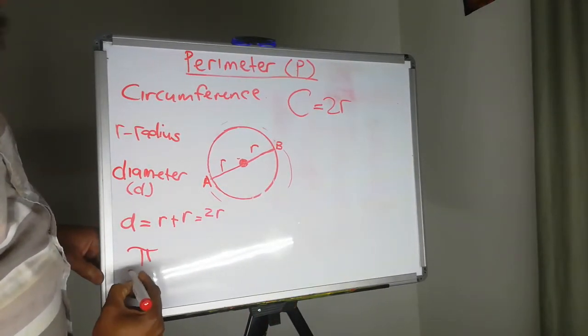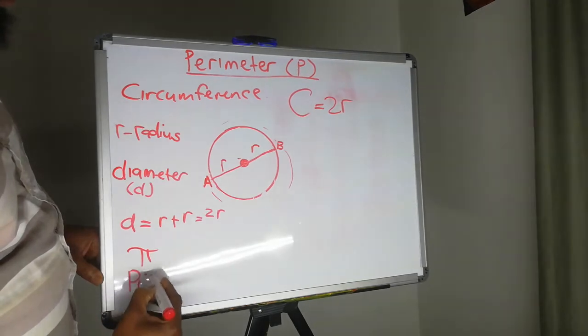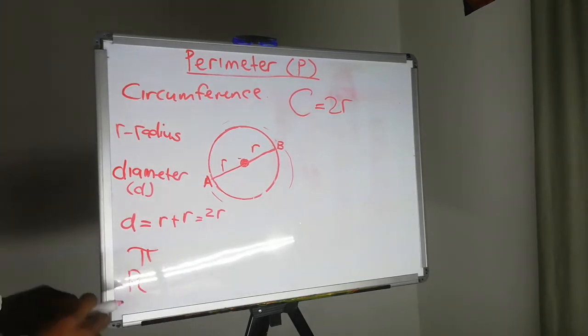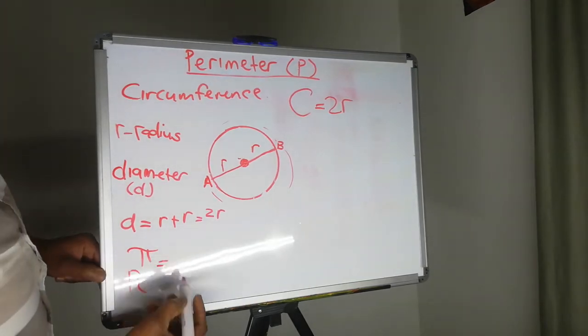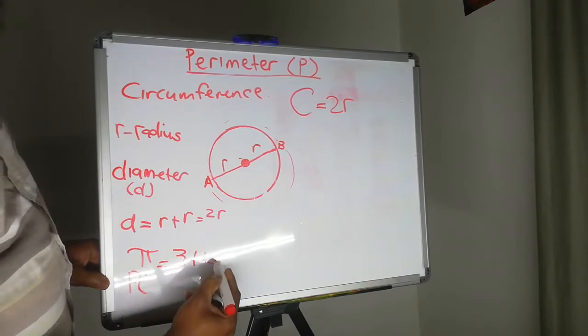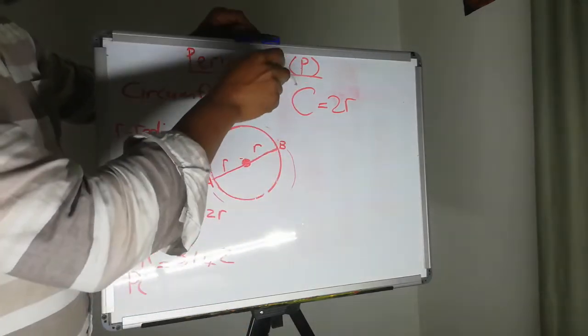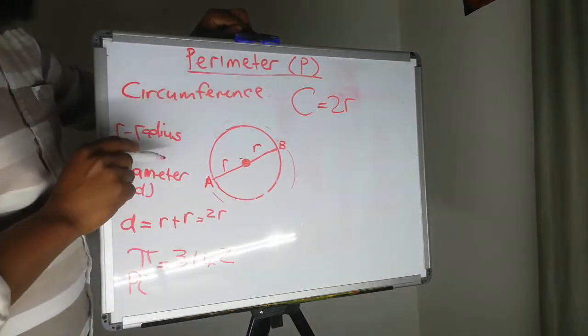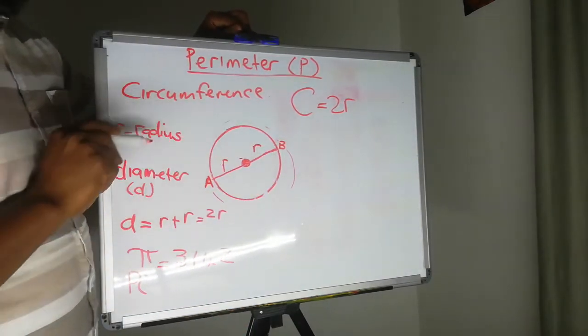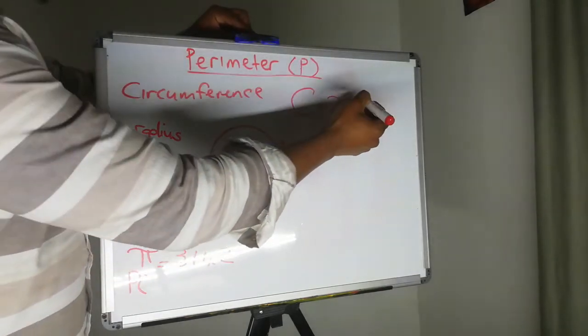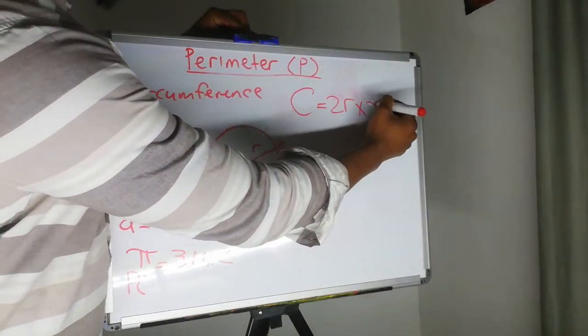This is pi. Not like the one that we eat. This is a different pi. And pi that we use is 3.142. So the circumference of the circle is two pieces of radii multiplied by pi.